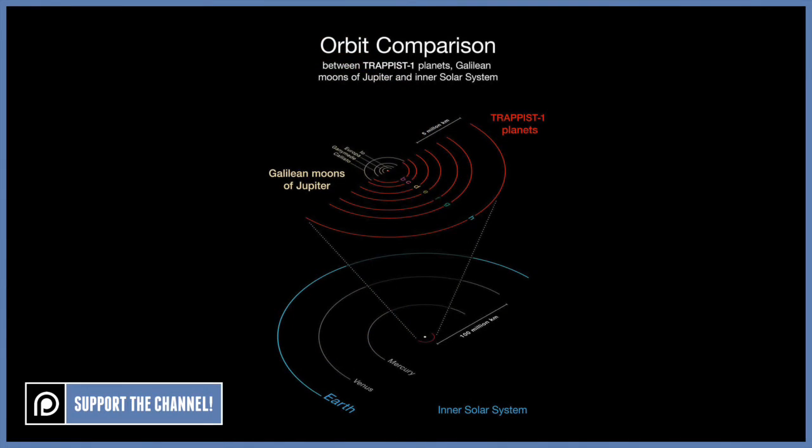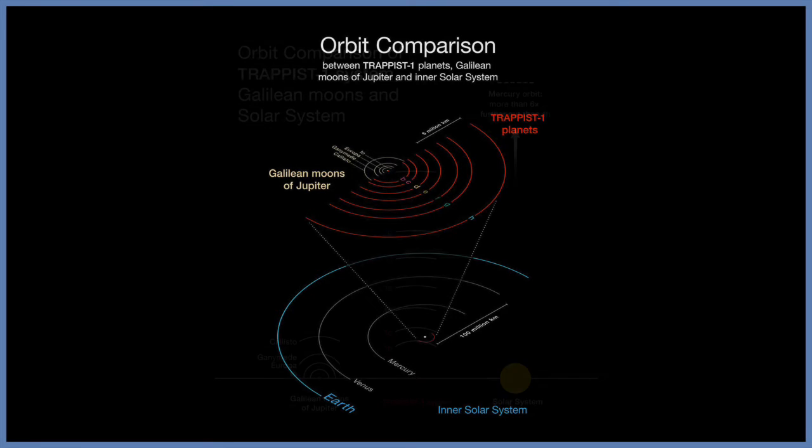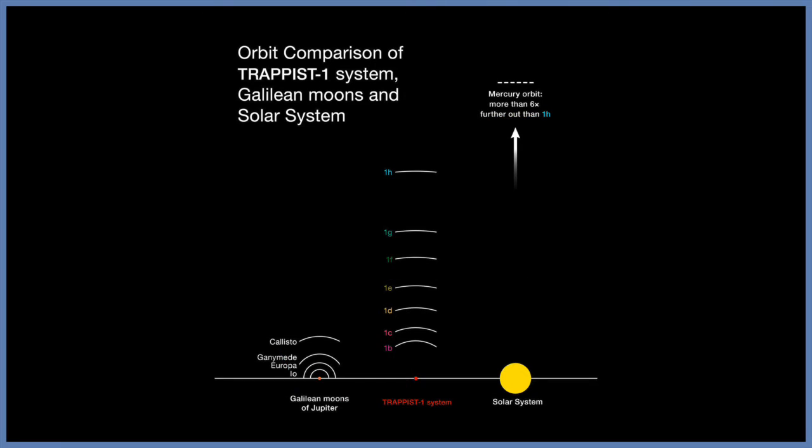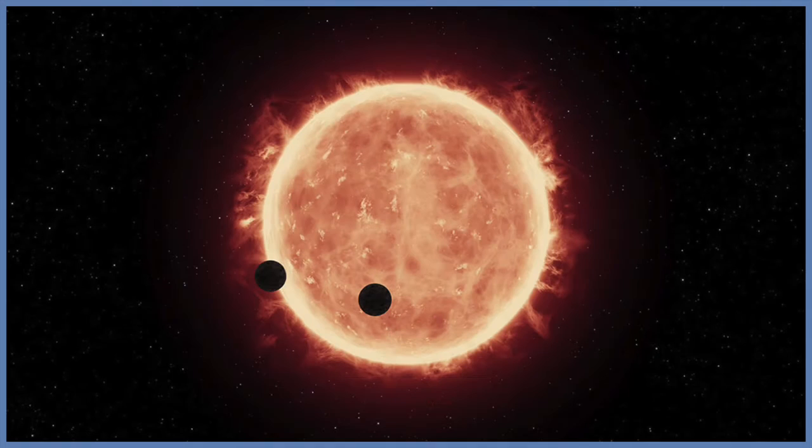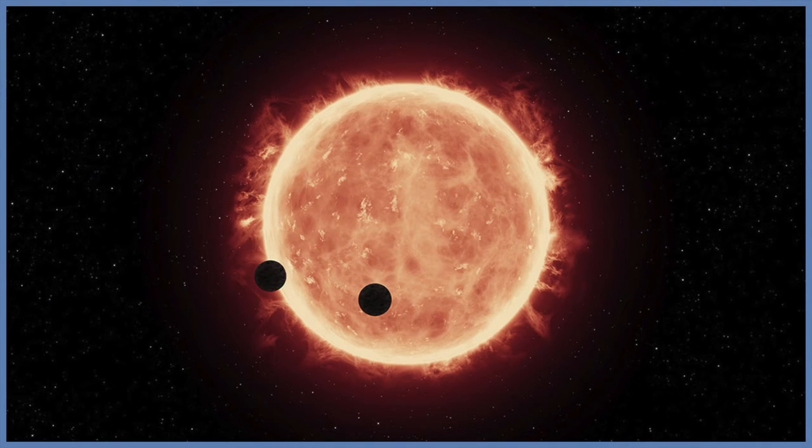All seven planets in this system orbit closer to its host star than Mercury does to our Sun. This means that the planets are also very close to each other. If a person was standing on the surface of the planet, they could gaze up and potentially see geological features or clouds of the neighboring worlds. This means that some planets could appear larger than the moon in the Earth's sky.